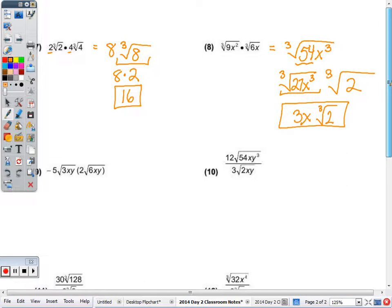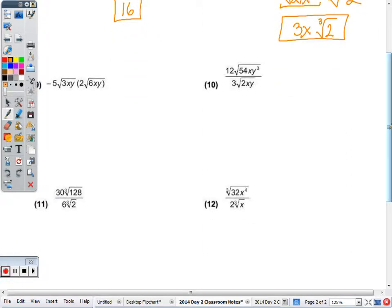Number 9. Multiplying our coefficients, negative 5 times 2 is negative 10. Radical 3 times 6 is 18. xy times xy is x squared y squared. So once again, it is divisible by 2, which is my index.